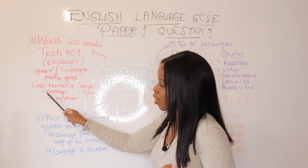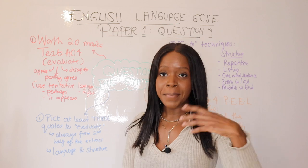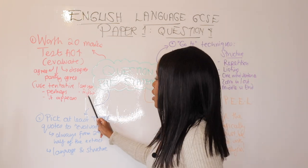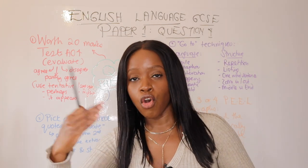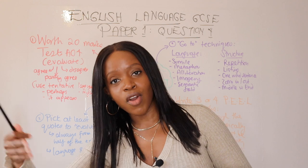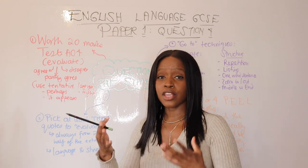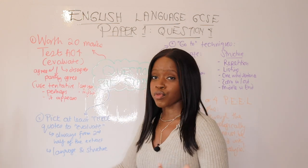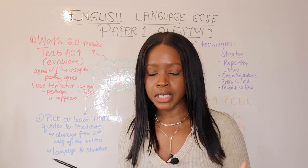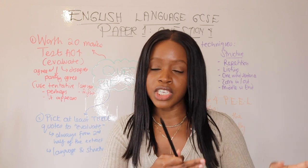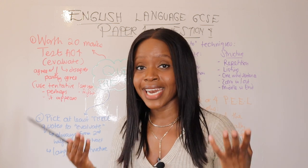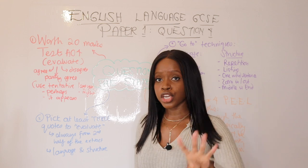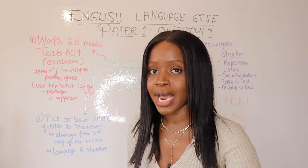A good way to approach this is to sit in the middle and use tentative language — like 'perhaps the student is right because of this, however that might equally perhaps not be completely right because of this other technique.' Or maybe just make your life easier and agree with the statement, because the student statement never tends to contradict what's going on in the extract. That's step one for approaching question four.